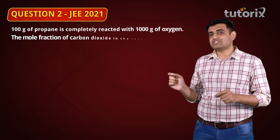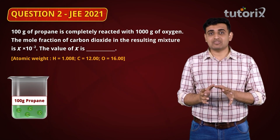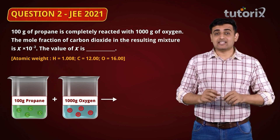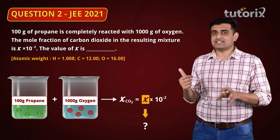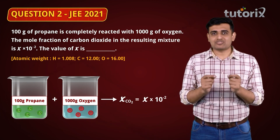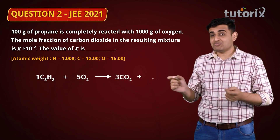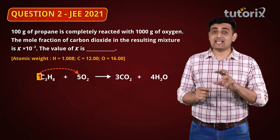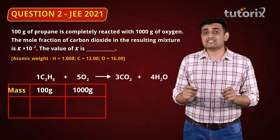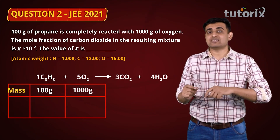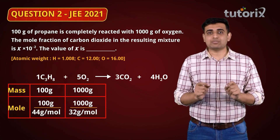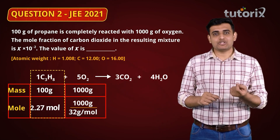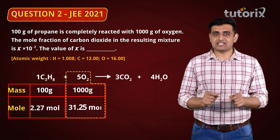Moving to the next question, also from the 2021 Mains exam: 100 grams of propane is completely reacted with 1000 grams of oxygen gas. The mole fraction of carbon dioxide gas in the resulting mixture is x × 10⁻². We have to find the value of x. This involves combustion of propane, so first we write the combustion equation, which shows that 1 mole of propane reacts with 5 moles of oxygen. Converting the given masses: moles of propane = 2.27 moles, and moles of oxygen = 31.25 moles.